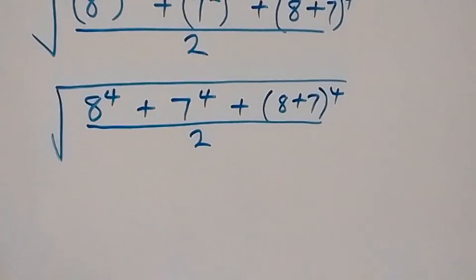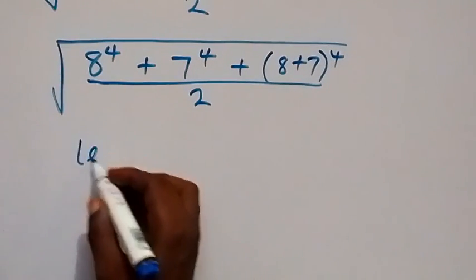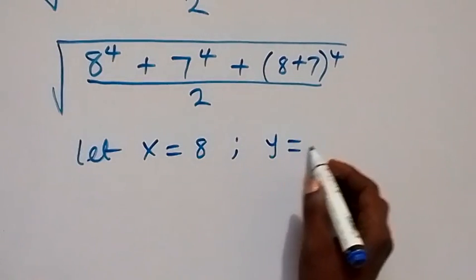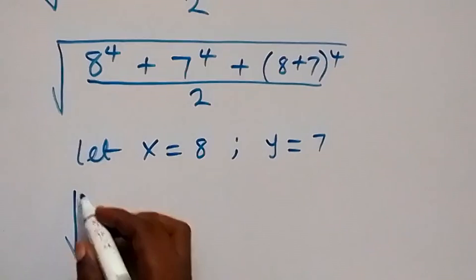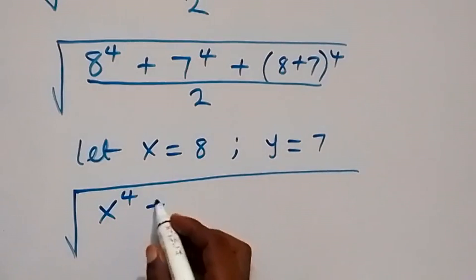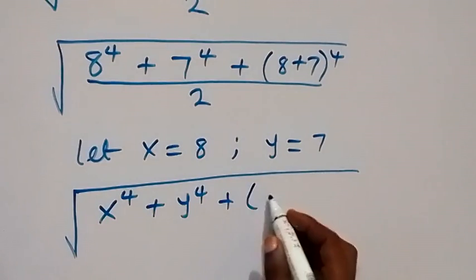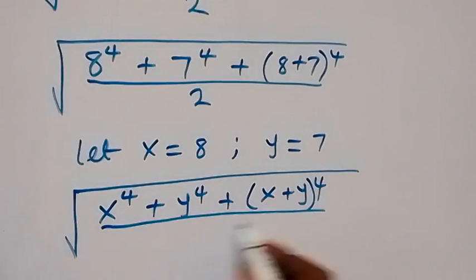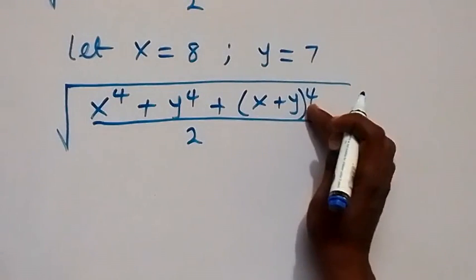Now let's use letters to represent 8 and 7. Let x equal 8 and y equal 7. So we can write this in terms of x and y as: square root of x raised to power 4, plus y raised to power 4, plus (x plus y) all raised to power 4, divided by 2.